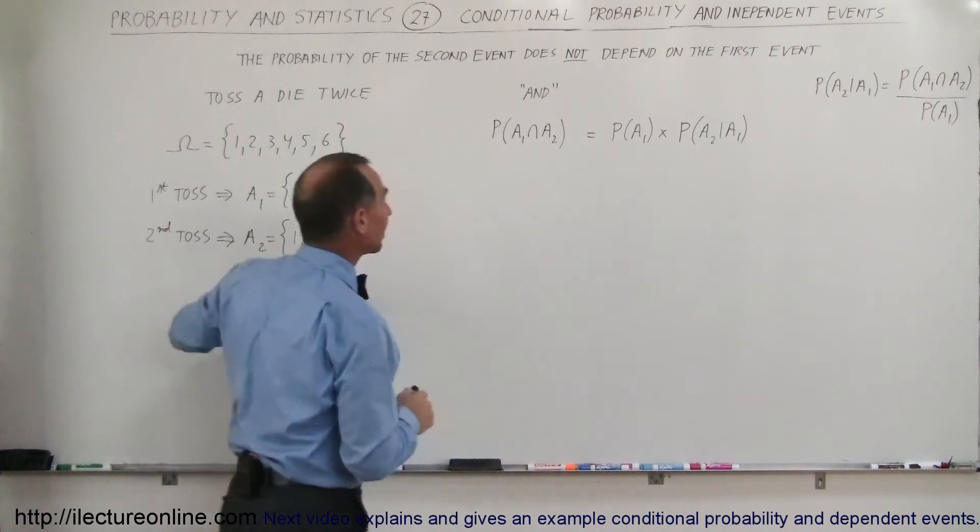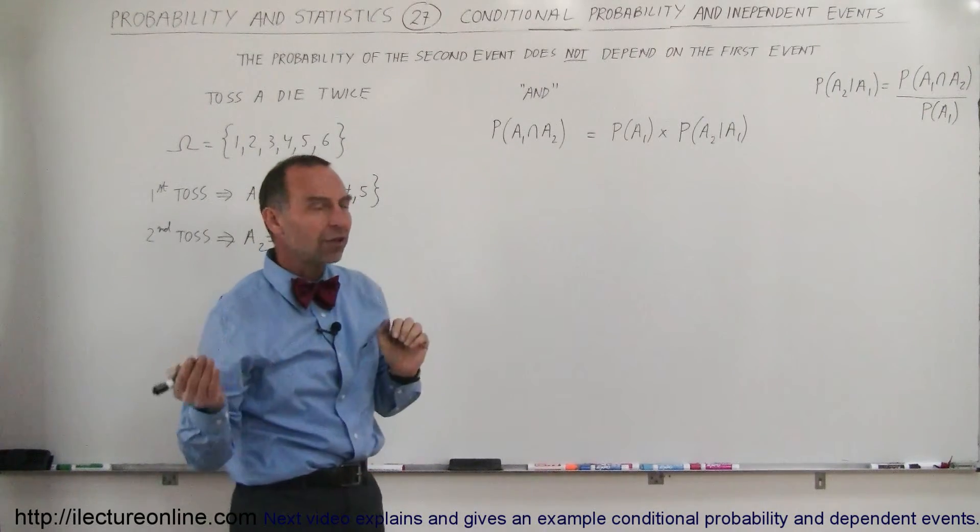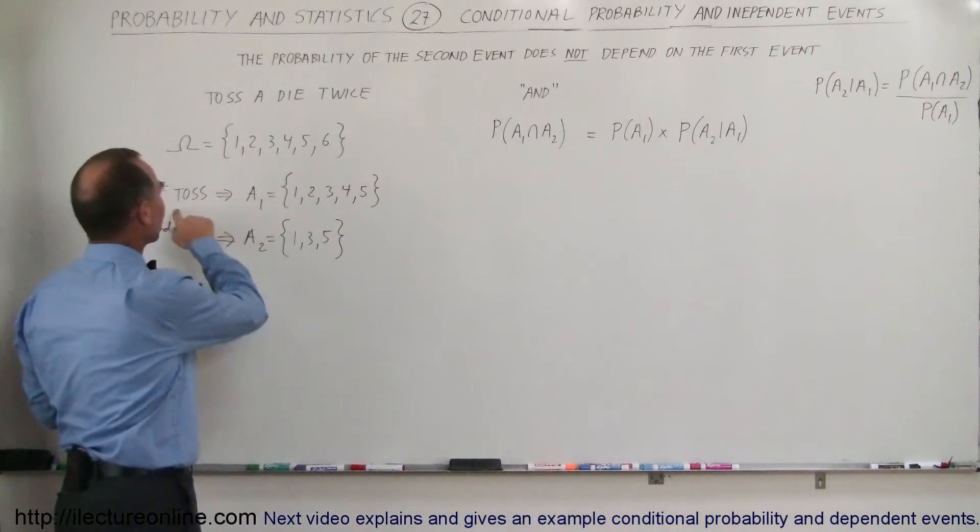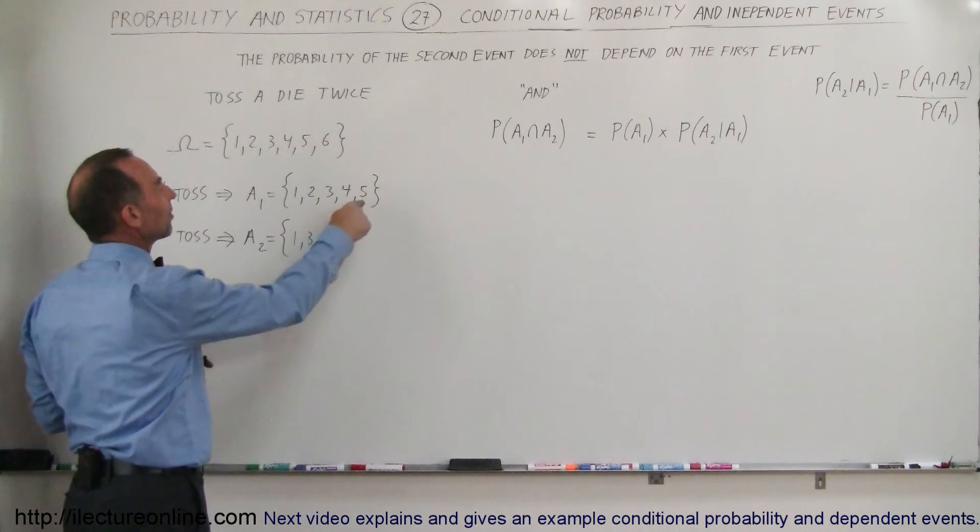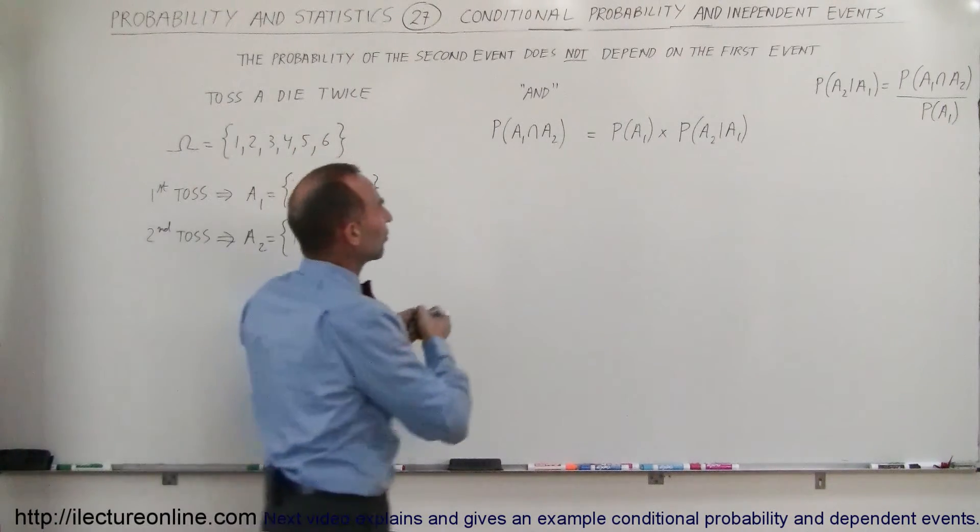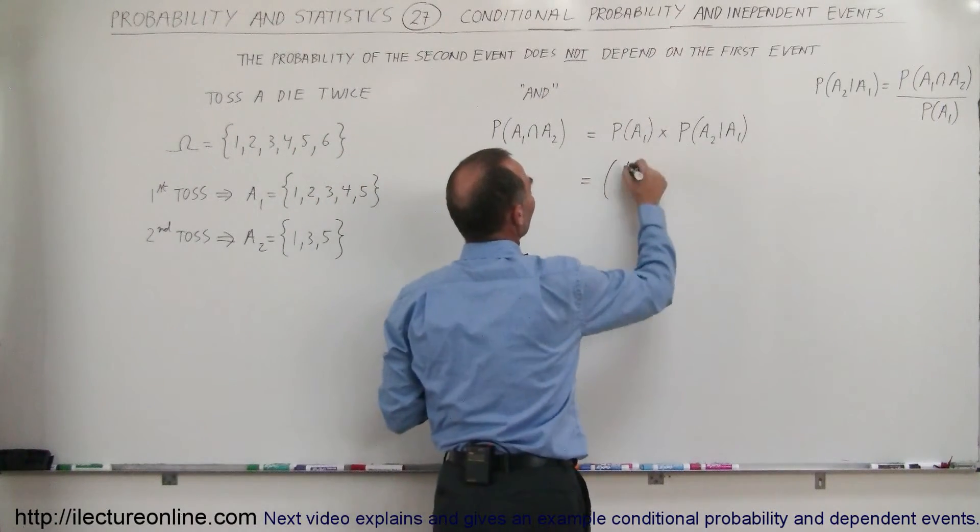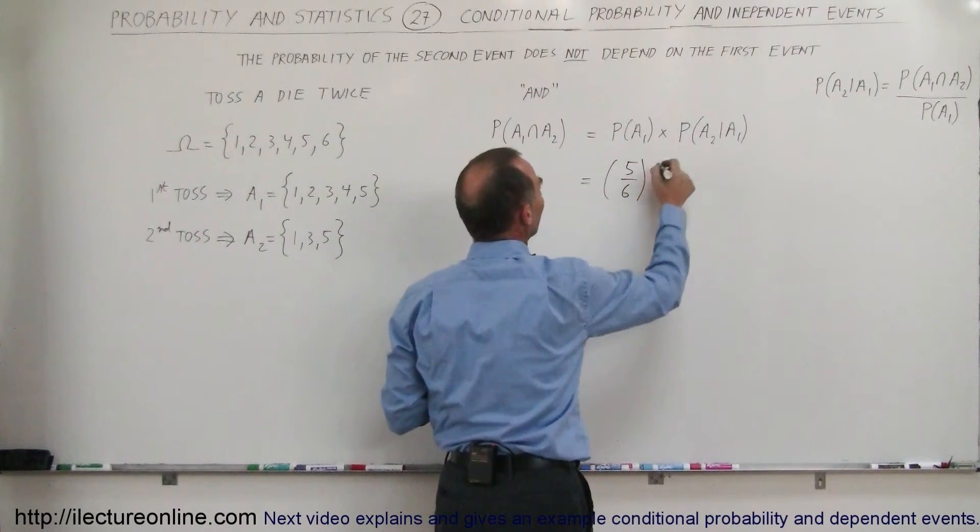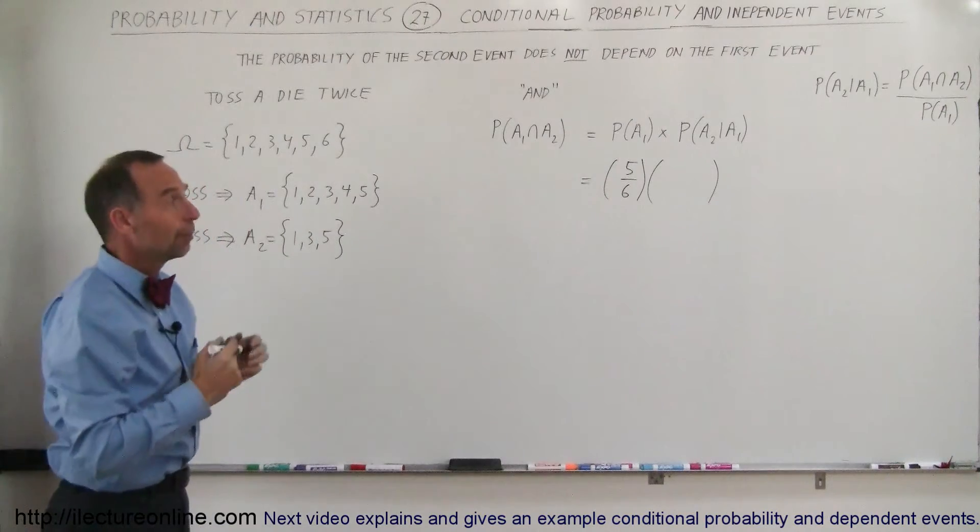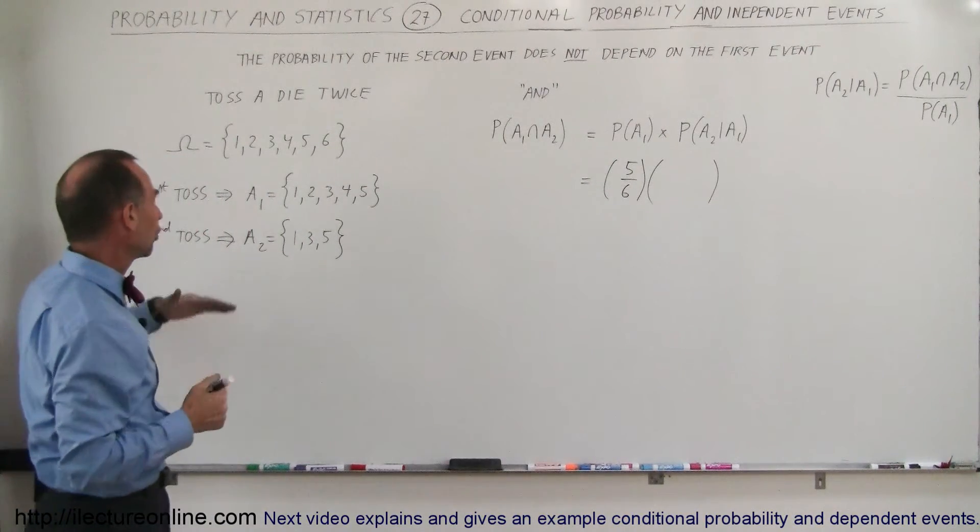So let's take a look at the example right here. We're going to toss the die twice. So what is the probability that the first event has occurred? The first event is a number less than 6, so the probability is 5 divided by 6. So this would be equal to 5 divided by 6. Now we're going to multiply that times the probability that event 2 will occur, but it depends upon event A1 having occurred.